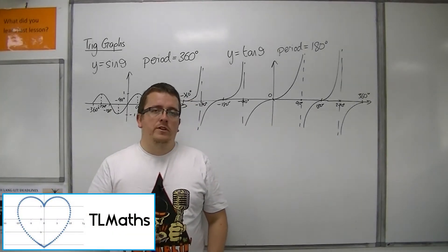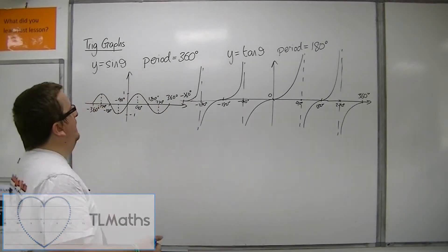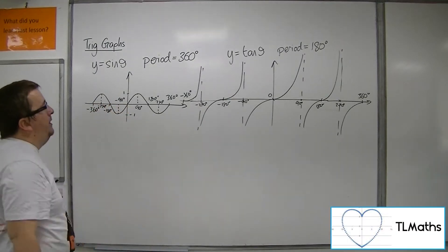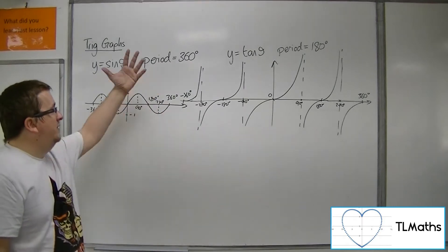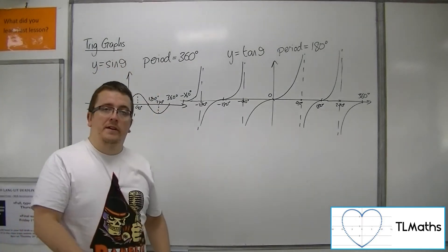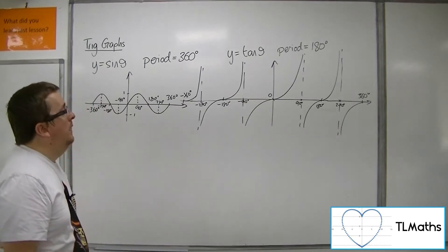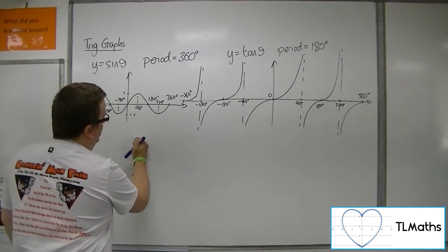Previously, we've looked at the period of sine, cosine, and tan. I've saved the graphs of sine and tan. Cosine, because that's the same period as 360, pretty much everything I'm going to say for sine works for cosine as well. So I've rubbed off cosine.